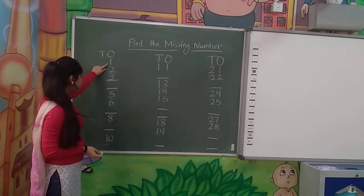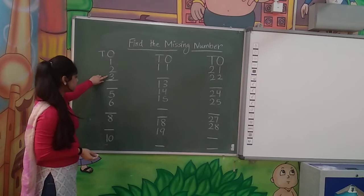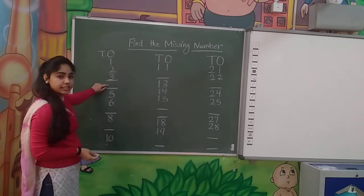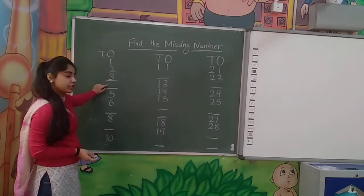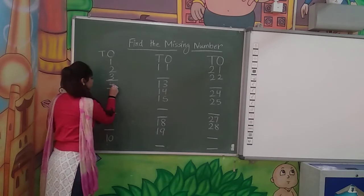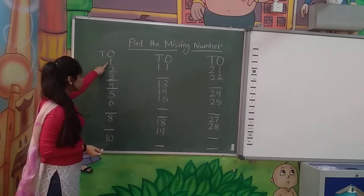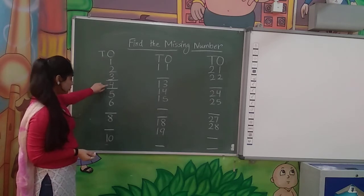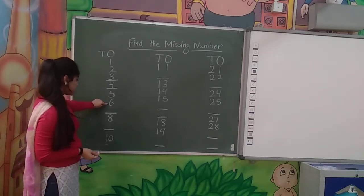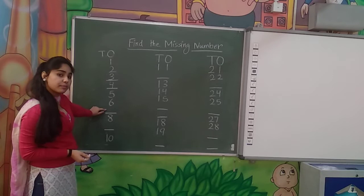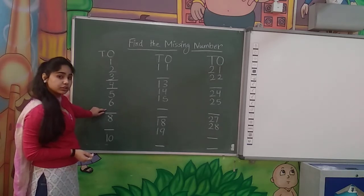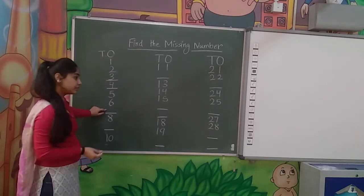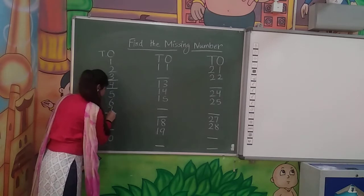Again start counting. 1, 2, 3, 4. Okay. 1, 2, 3, 4, 5, 6, 7. What will we write? 7. We will write it out. 7. Yes.